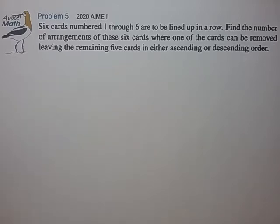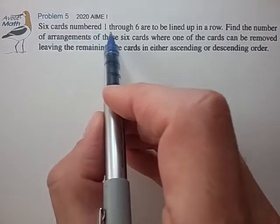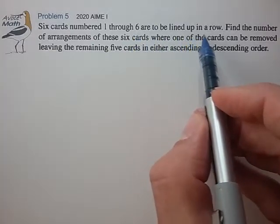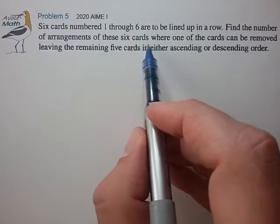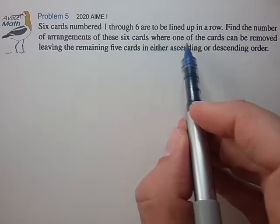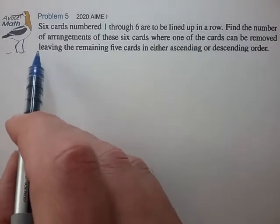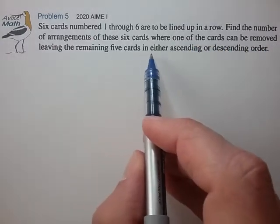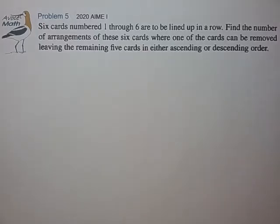This is Problem 5 from the 2020 AMC 10. Six cards numbered 1 through 6 are to be lined up in a row. Find the number of arrangements of these six cards where one of the cards can be removed, leaving the remaining five cards in either ascending or descending order.